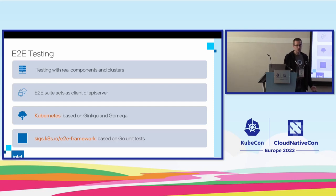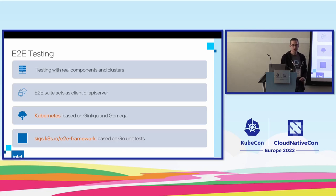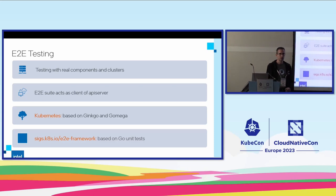We have two end-to-end frameworks under SIG testing, which is a bit confusing. The one in Kubernetes used for testing Kubernetes is the older one, based on Ginkgo and Gomega. Ginkgo is the test runner that organizes the test suite and which tests run at which point. Gomega is an assertion library you use inside your tests to make statements about expected states. Testify is another alternative to Gomega, but in our case we use Gomega.